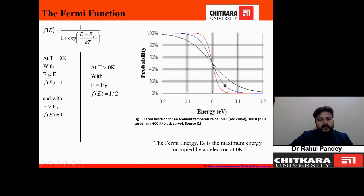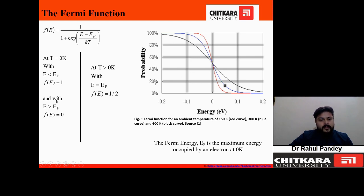At T equal to zero Kelvin with E less than E_F: the numerator of the exponent becomes negative, temperature is zero, so this becomes negative infinity, making the probability function equal to one. All energy states below the Fermi energy are filled with electrons. For the second case, when E is greater than E_F, the numerator is positive, the exponent becomes positive infinity, making the distribution function equal to zero — all energy states above E_F are empty.